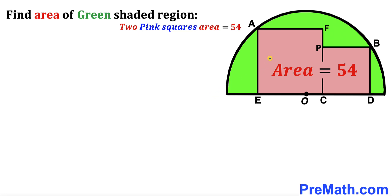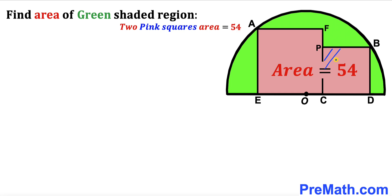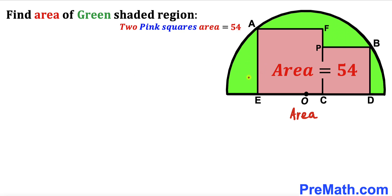Welcome to pre-math. In this video, we have got two pink shaded squares: a big square AECF and a smaller square CDBP, fully inscribed in a semicircle, such that points A and B are on the semicircle and O is the center. The combined area of these two pink squares has been given as 54 square units. Our task is to calculate the area of the green shaded region.